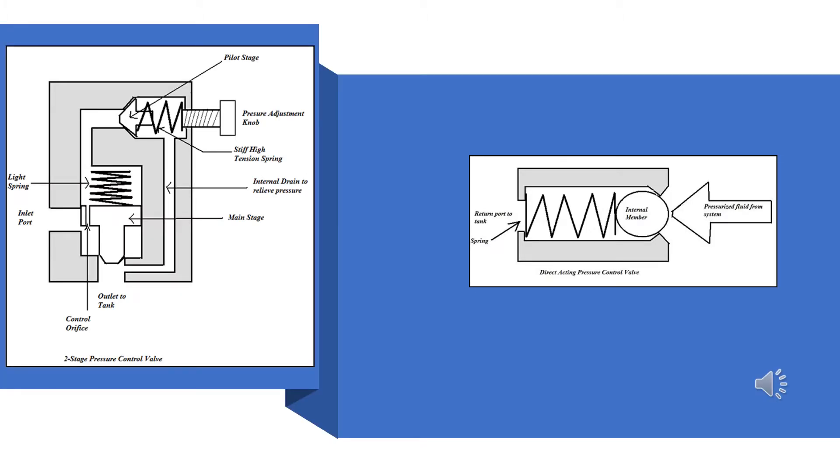On the screen are the two valves that we discussed a moment ago. On your right is a direct acting valve. Basically, these valves have a movable member, like a ball or a poppet. It's held in position by a spring.